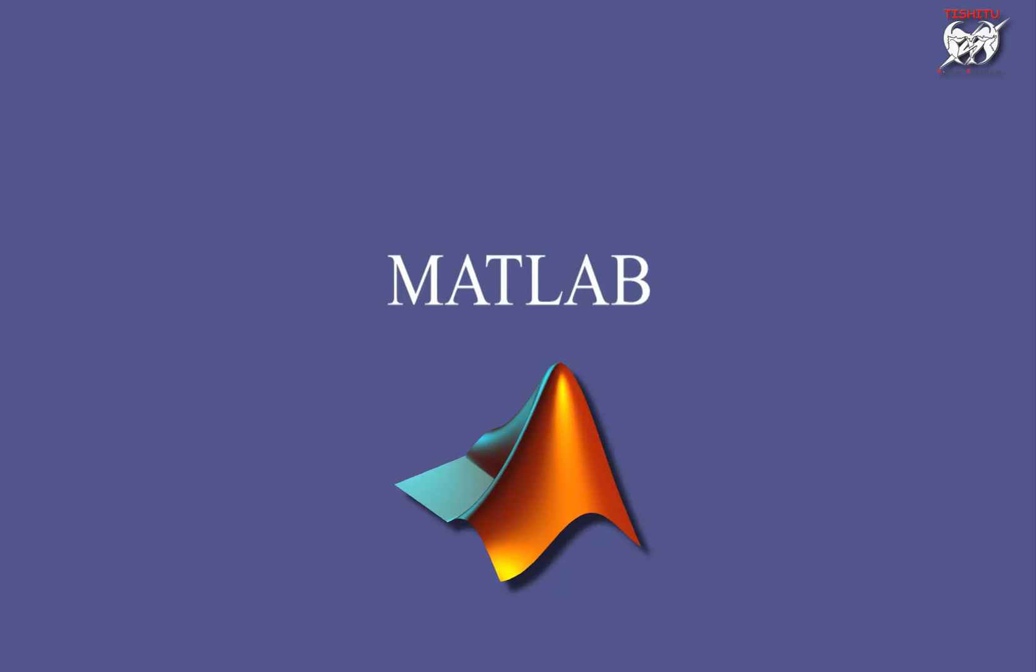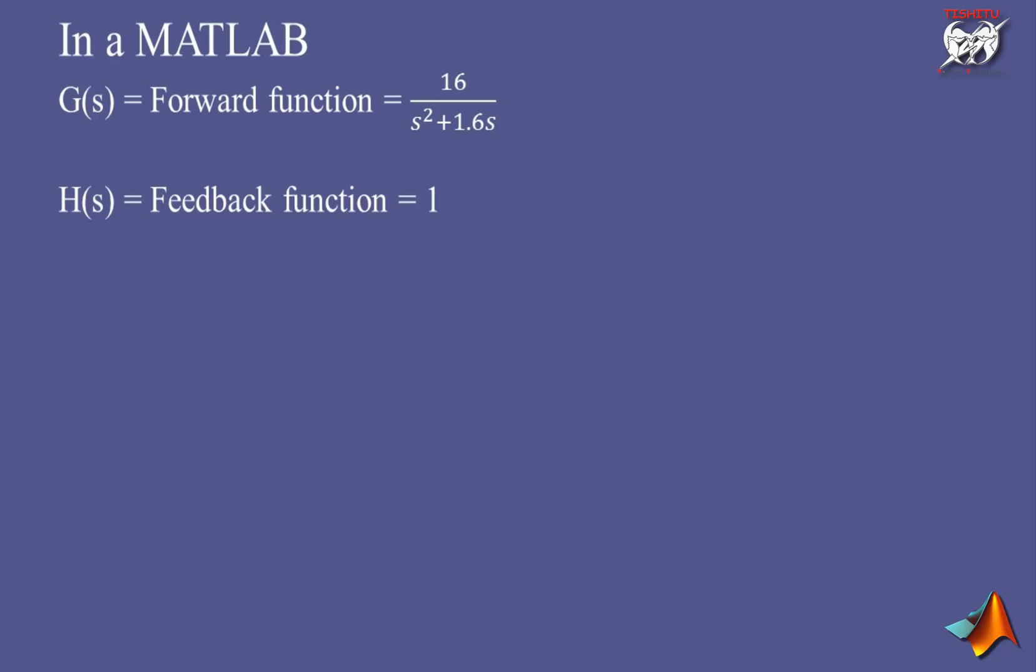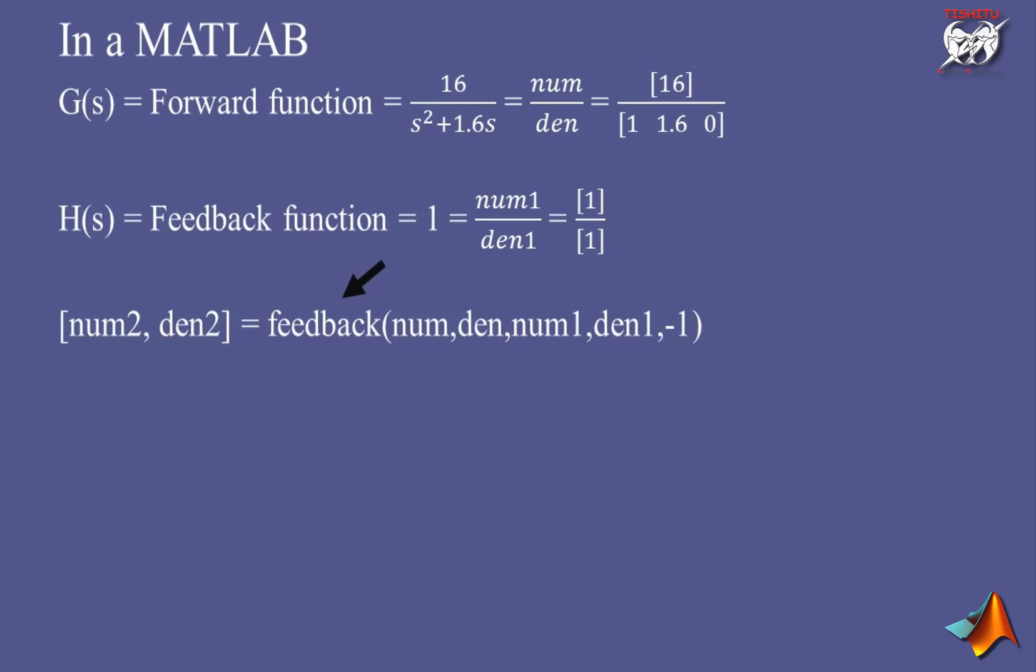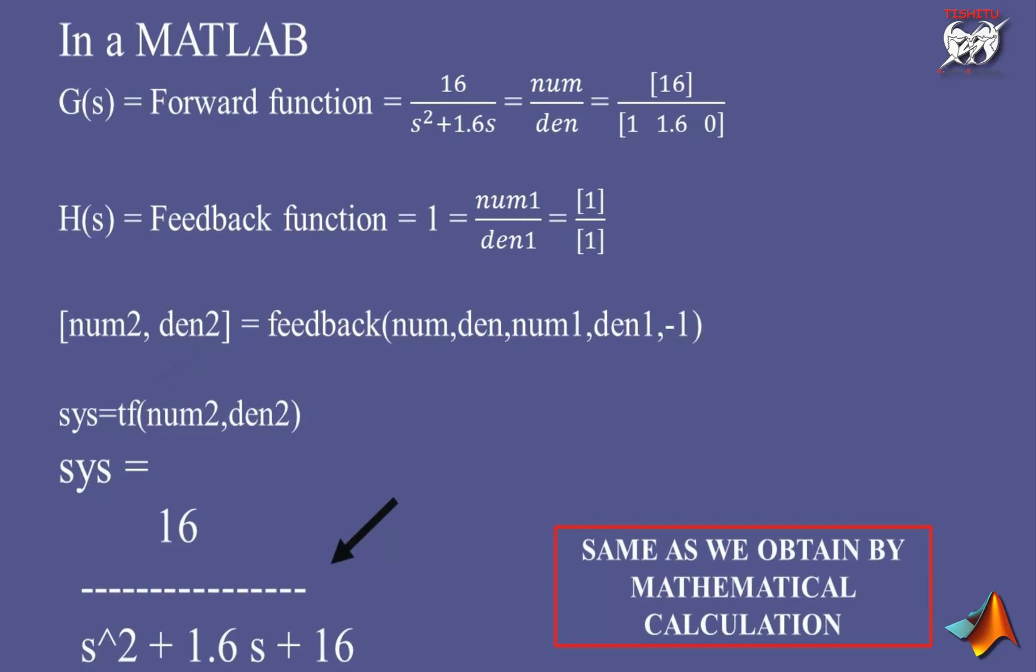In MATLAB we will use some commands to calculate transfer function and step response. First, we understand here then just copy it on MATLAB platform to code it. From the assumed problem, we have forward function as G(s) and feedback function as H(s). We will write the coefficient of numerator and denominator of G(s) as shown. In numerator, we have only one coefficient that is 16. In denominator, we have equation s squared plus 1.6s. Then its coefficients are arranged in descending order as 1, 1.6, 0. Zero represents that there is no constant term present in the denominator. Same for H(s), we have one by one as coefficients. Then use feedback command to evaluate numerator and denominator coefficient of complete system. Then use transfer function command termed as TF to evaluate transfer function of system and assign it in sys variable. And finally we get transfer function in MATLAB as shown value of sys variable.